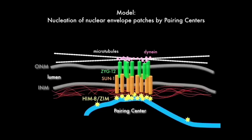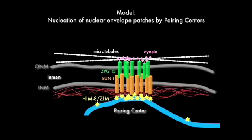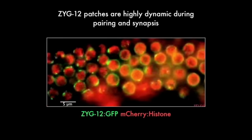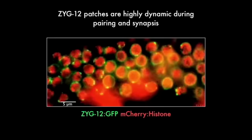And that this enables cytoskeletal forces to act on chromosomes through the intact nuclear envelope and to move them around during early meiosis. We can see that directly by live imaging here of a worm expressing ZYG12 GFP and mCherry histone, which marks the chromosomes.